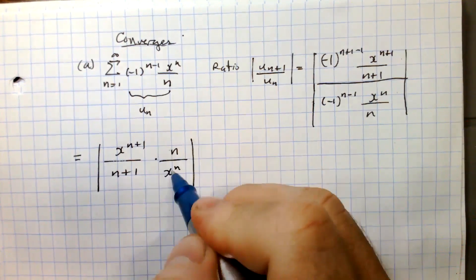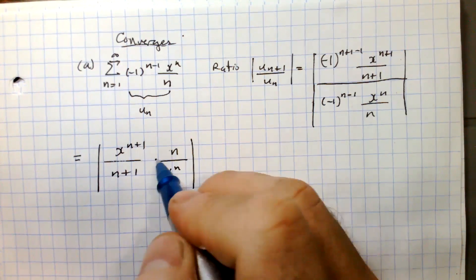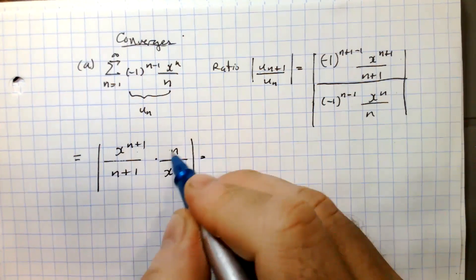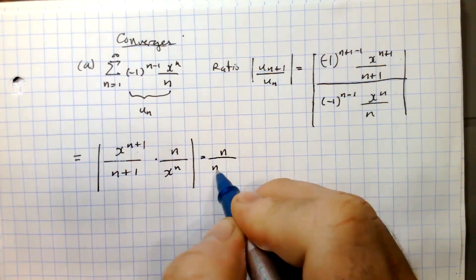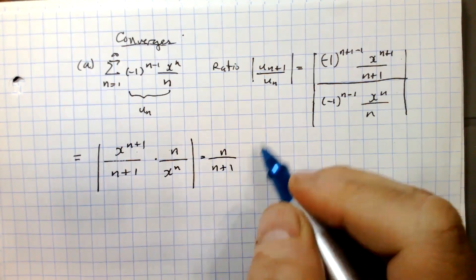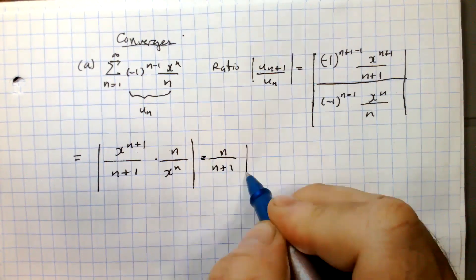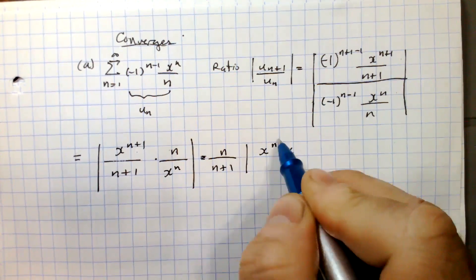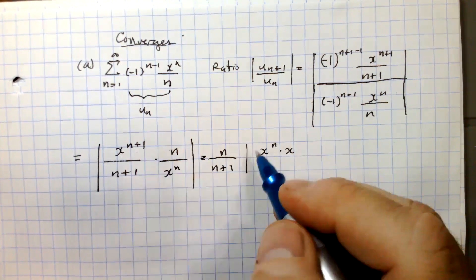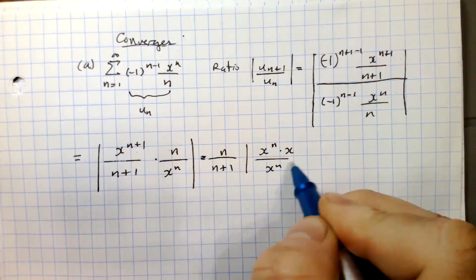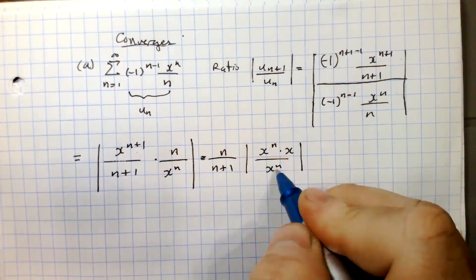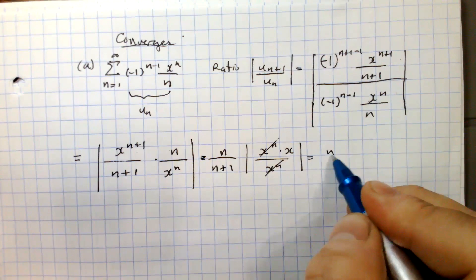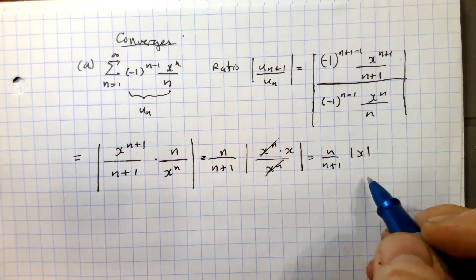Since n is a positive number, it comes out of the absolute value. We pull out (n+1) as well, since it's always a positive natural number. Then we rewrite x to the (n+1) as x to the n times x. Since we have a common factor of x to the n in numerator and denominator, it reduces to 1, leaving us with n over (n+1) times the absolute value of x.